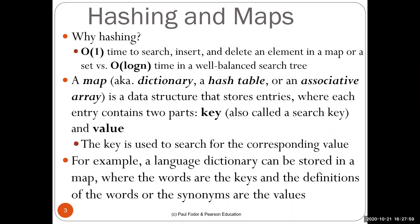A map — also called a dictionary, hash table, or associative array — is a data structure that stores key-value pairs. The key is used to find the corresponding value, and we want to find any key in constant time. You can think of it as a large dictionary like WordNet where you search by word to get its definition. We want constant-time access to search, insert, or delete an element.